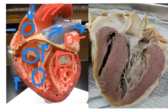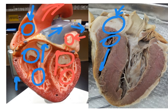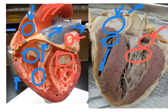On the sheep heart: the vena cava coming into the right atrium going through the tricuspid valve into the right ventricle and then up and out the pulmonary trunk going to the lungs. Oxygenated blood returning via the pulmonary veins into the left atrium, through the bicuspid or mitral valve into the left ventricle, and then going up through the aortic semilunar valve out the aorta.